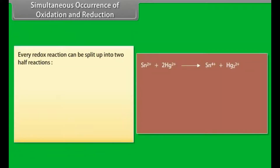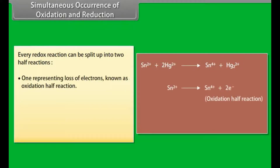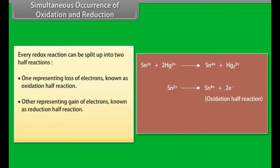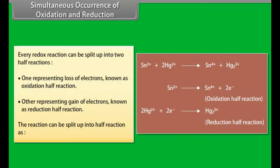Every redox reaction can be split up into two half-reactions: first, representing loss of electrons, known as the oxidation half-reaction; and second, representing gain of electrons, known as the reduction half-reaction. For example, Sn²⁺ gives rise to Sn⁴⁺ plus 2 electrons — this is the oxidation half-reaction. And 2Hg²⁺ plus 2 electrons gives rise to Hg₂²⁺ — this is the reduction half-reaction.